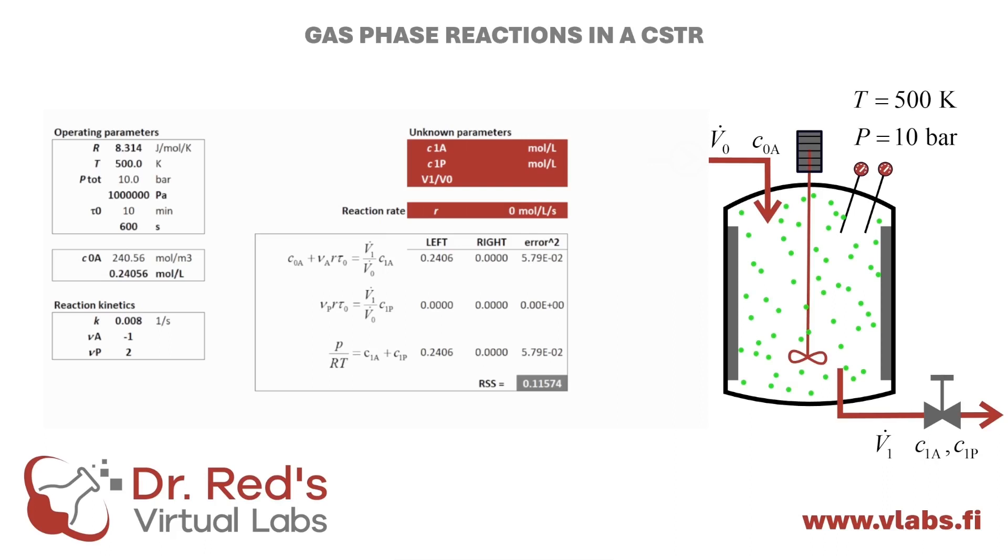The unknowns we aim to solve for are at the top right, highlighted in red. We'll input initial guesses to better understand the calculation process. The reaction rate is calculated from CA and the rate constant. Each equation to be solved is divided into two parts. We write the left-hand side in one cell and the right-hand side in an adjacent cell. The Excel formulas are written just as the equations on paper.